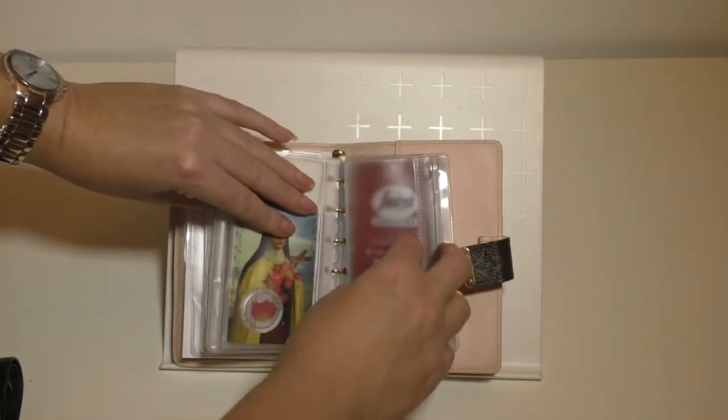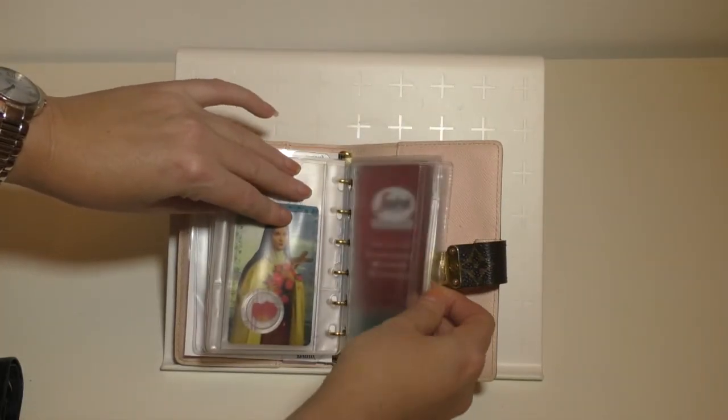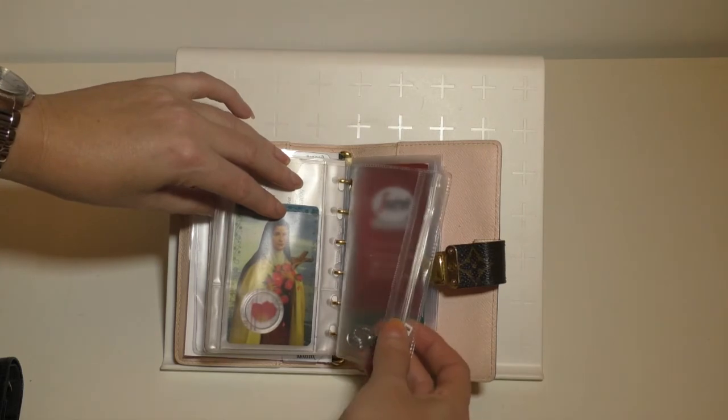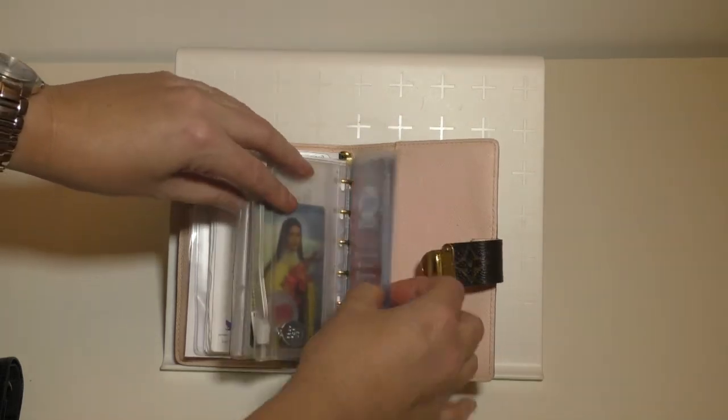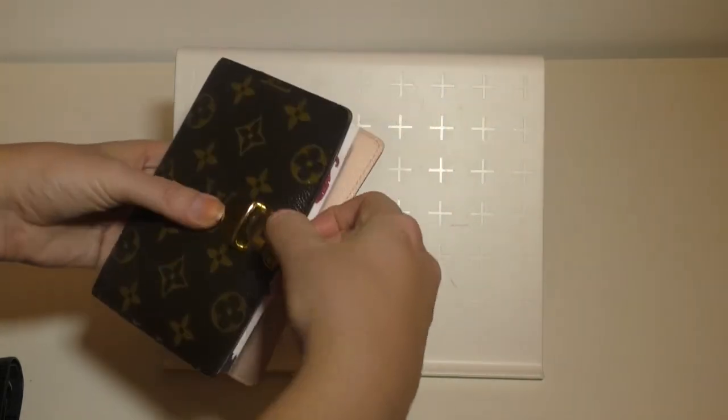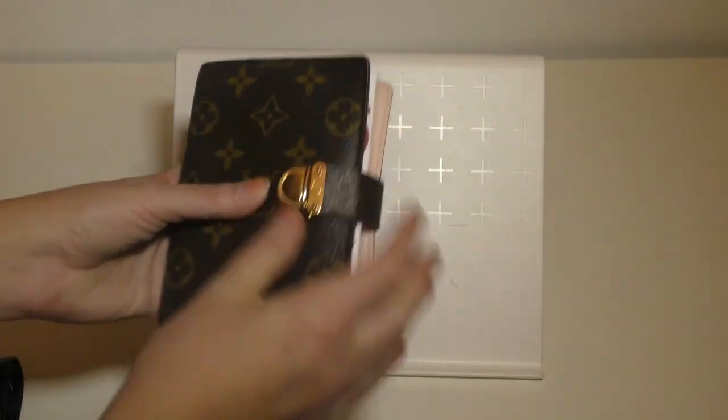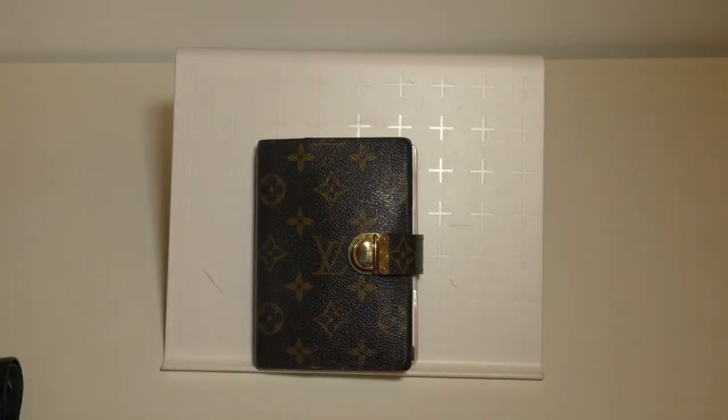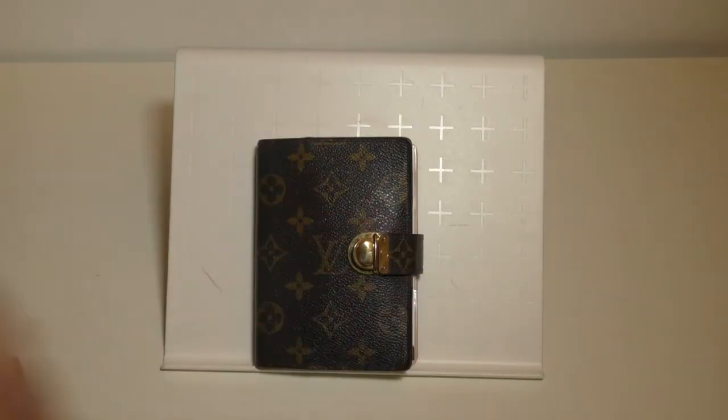Then in the back, there's the Filofax little zipper compartments and card holders I just put there for more loyalty cards. That is my Koala Louis Vuitton travel tracker. Very quick video today. I hope you enjoyed it. Thank you for watching. Ciao for now.